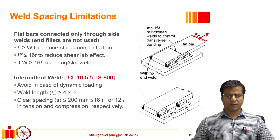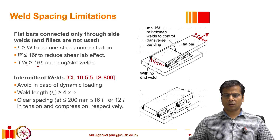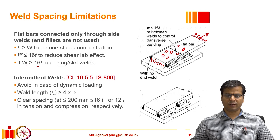If the width is more than 16 times the plate thickness, we must ensure the plates are not only welded at the edges but also at the end, or we may use plug or slot welds along the length and width of the plate to join the two plates together. This allows the force to be distributed more evenly between the plates through the welds.